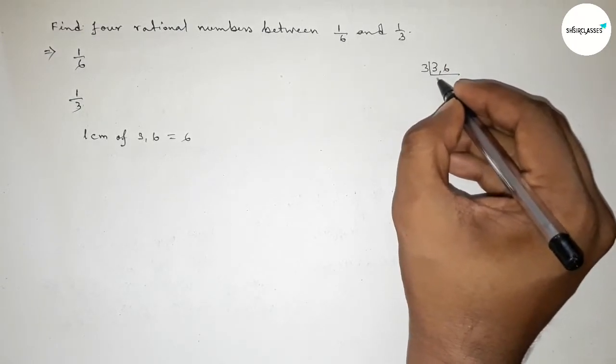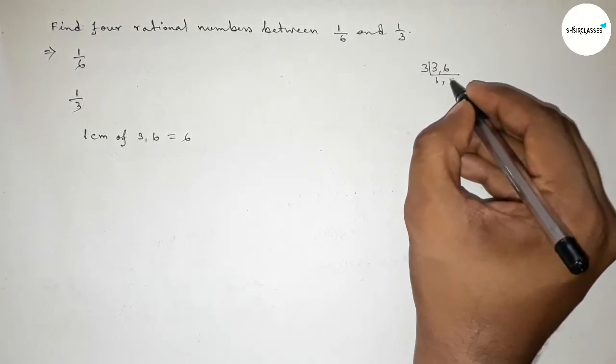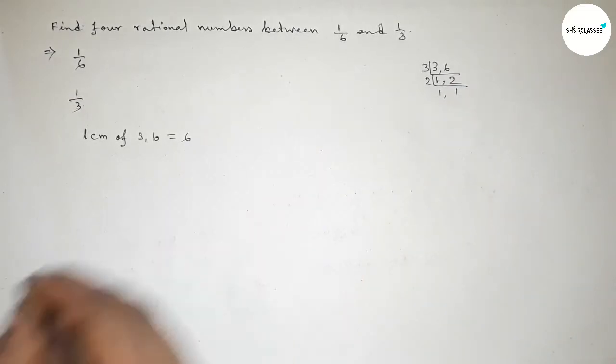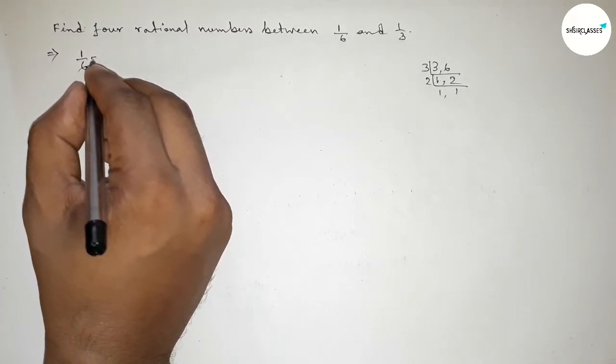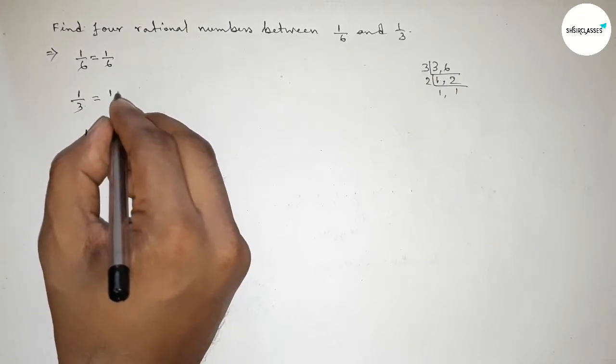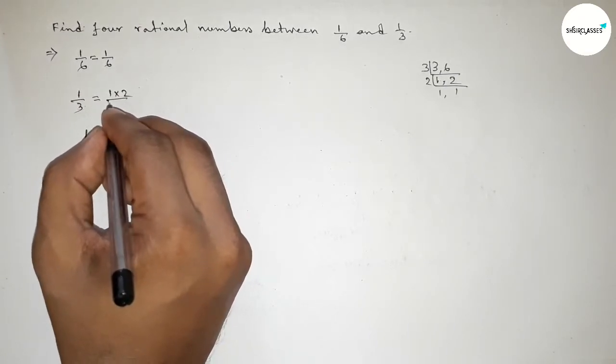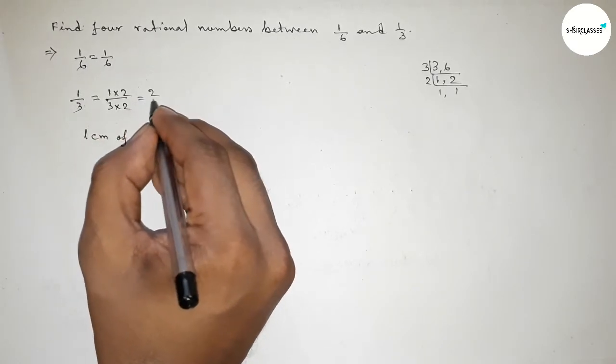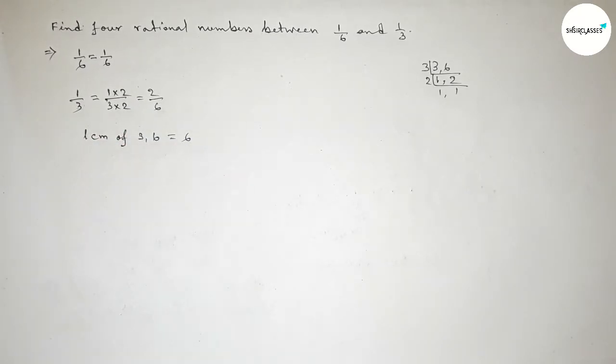Now roughly discussing here: if we factorize, first dividing by 3, then dividing by 2, and taking the multiplication, so obviously 6. First, multiplying 1 over 6 up and down by 1, so then 1 over 6. Now multiplying here by 2, so this is 2 over 6.